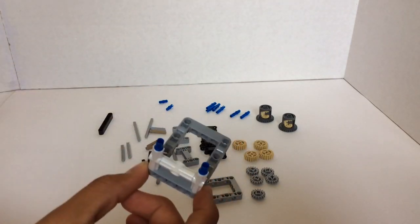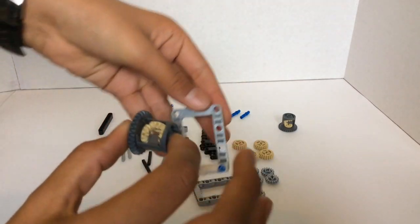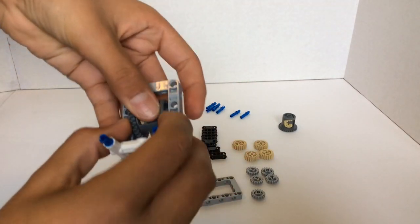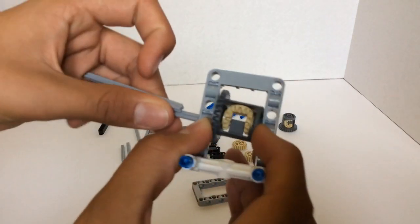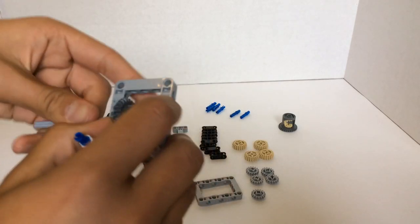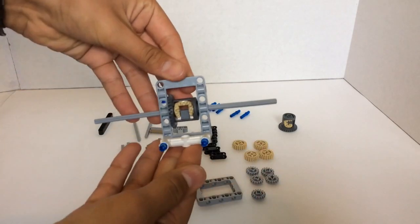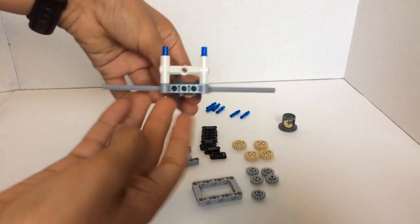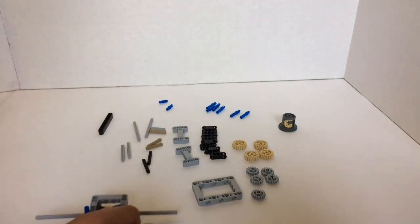Then with it oriented this way towards you, you're going to take one differential and put it inside in the very center. And then use your long axles to secure it in place. You'll secure it in place like that. Feel free to pause the video and have a look.